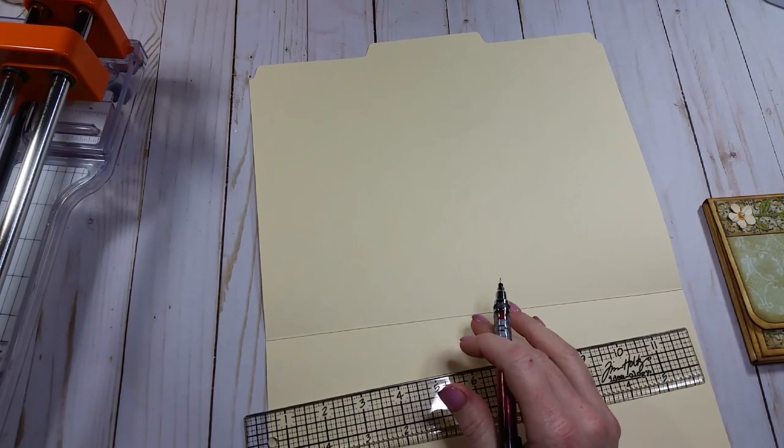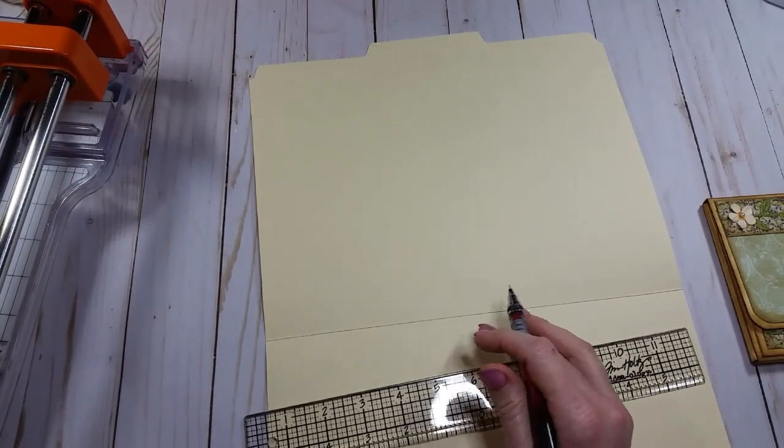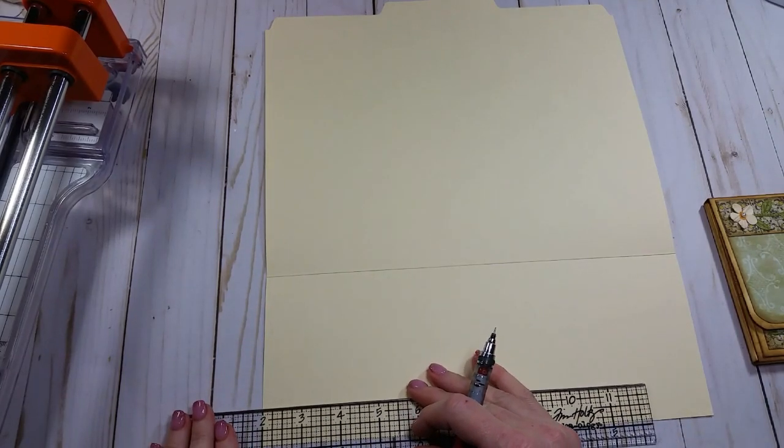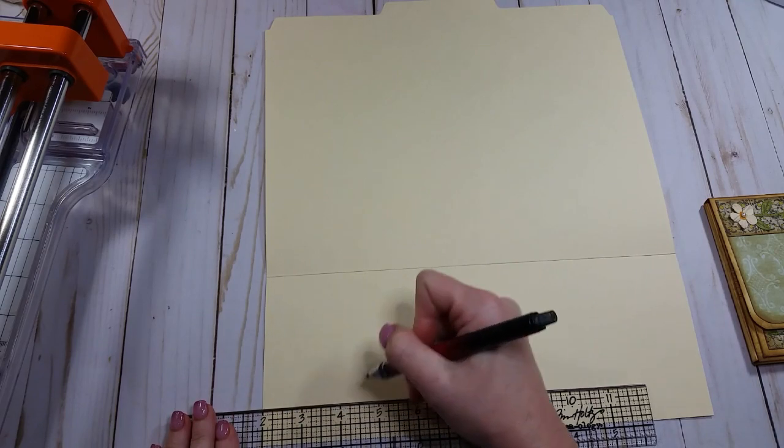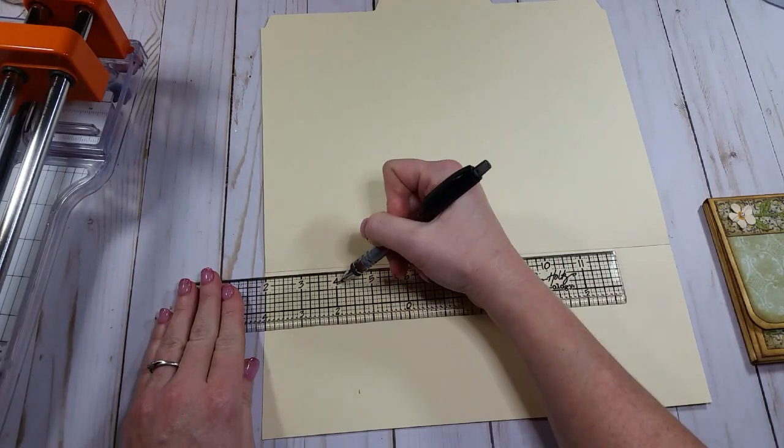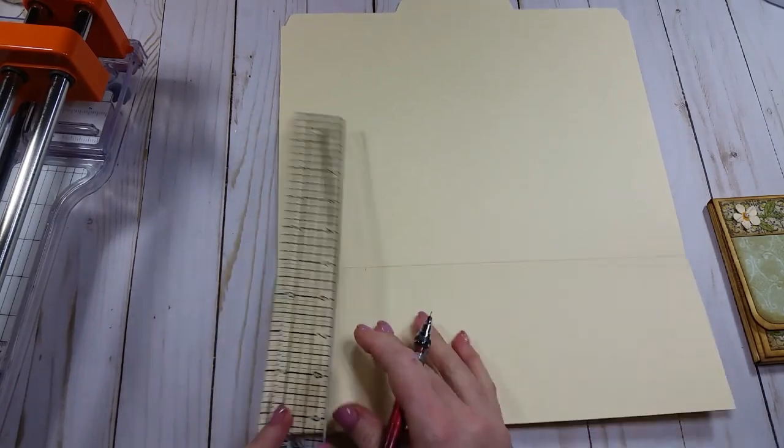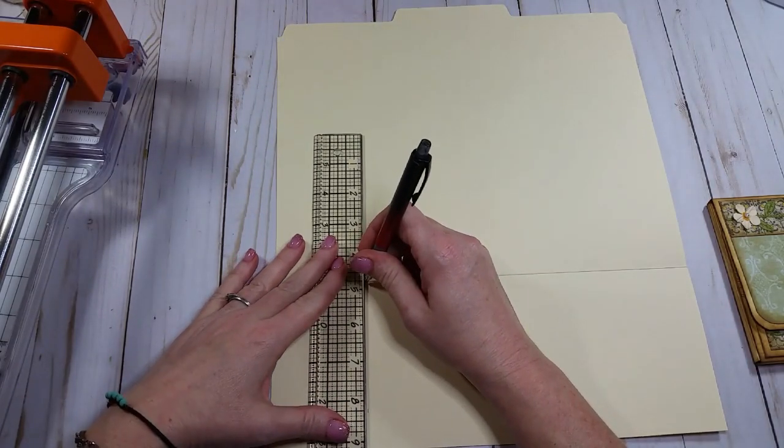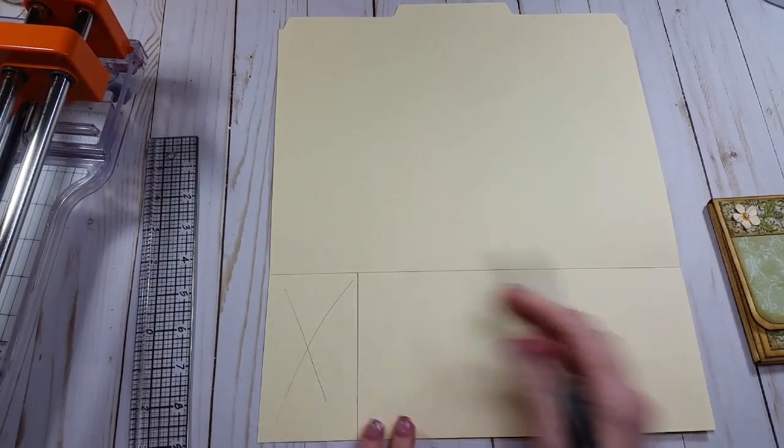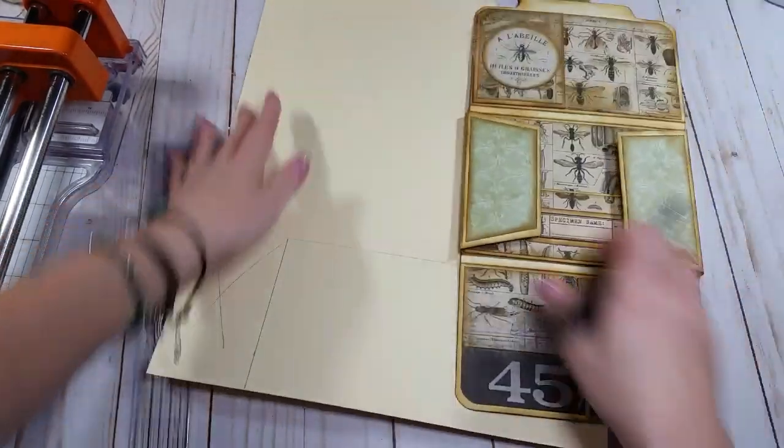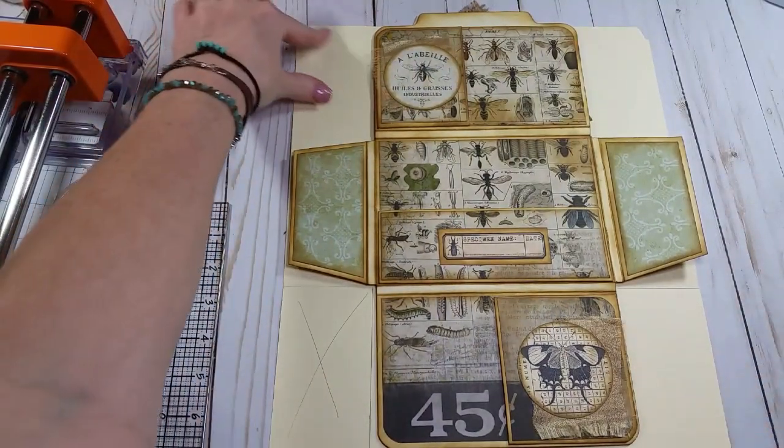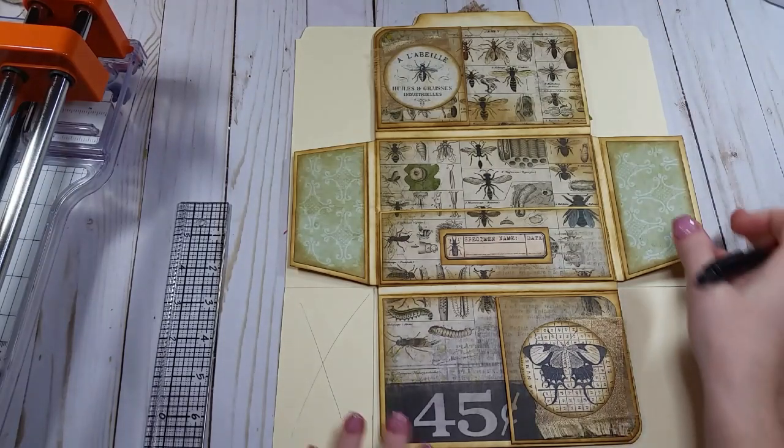And now we are going to measure in two and a half inches. So we're going to go from this edge, two and a half inches in. One, two and a half. One, two and a half. Draw that line down. And now this is going to be gone. We're getting rid of that. So essentially, I'm going to show you what we're doing here. Essentially, we're getting rid of this, and this, this, and this. Make sense?